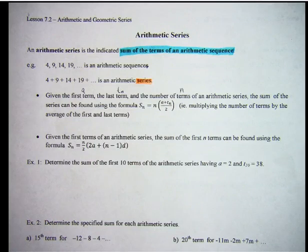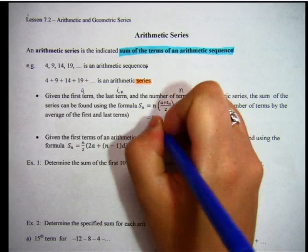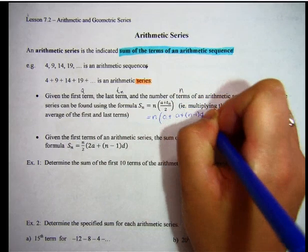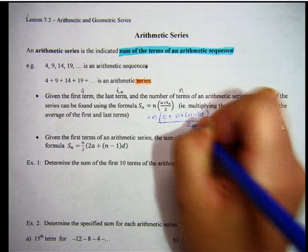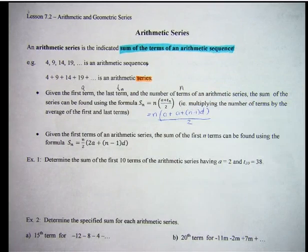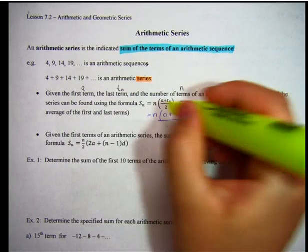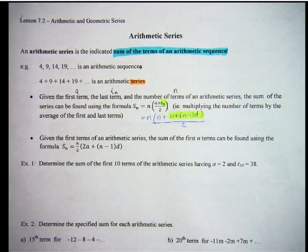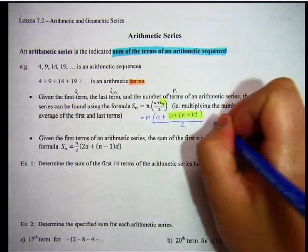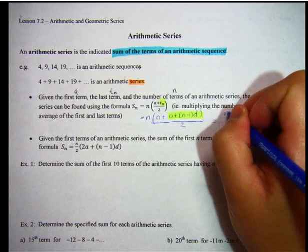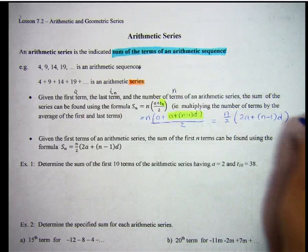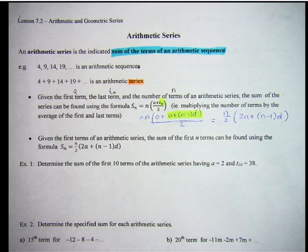If you were to rewrite this equation using the general term formula for an arithmetic sequence, so I'm replacing TN with A plus N minus 1 times D, and you simplify, you end up getting that, which turns into the second formula right below.